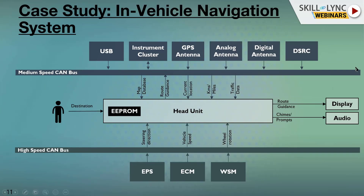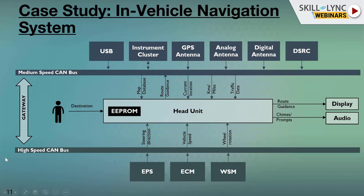The combination of data from the medium speed bus and high speed bus is defined by the OEM — the vehicle manufacturer. Components on the high speed side serve more critical functions. The head unit is connected to both buses, but usually there is a gateway in between because the two buses run at different speeds, and the information needs to be gated to the right speed.